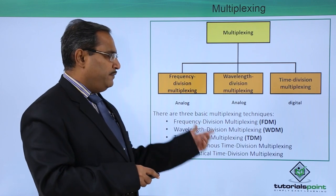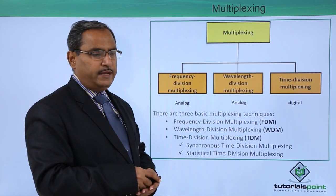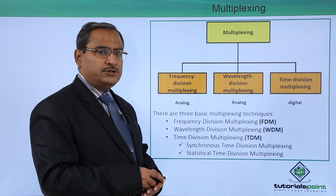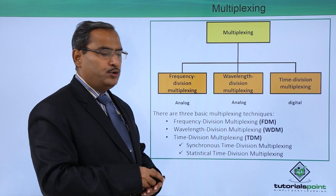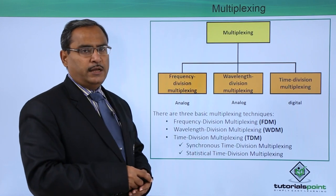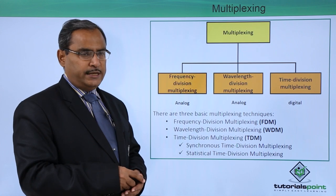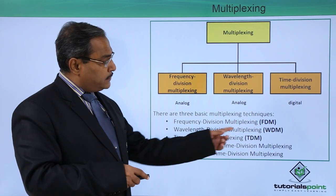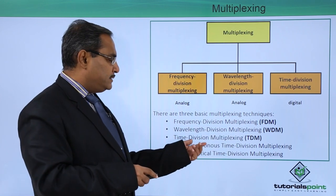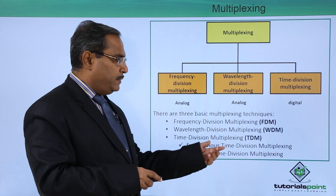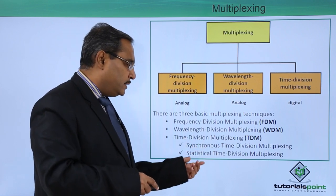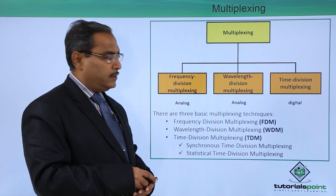One is frequency division multiplexing, in short FDM. Another is wavelength division multiplexing, in short WDM. And time division multiplexing, in short TDM. TDM has two varieties: one is synchronous time division multiplexing, and another one is statistical time division multiplexing.